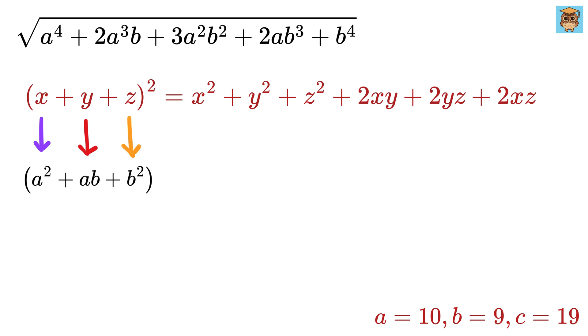then by applying the formula we get A squared plus AB plus B squared whole squared equals: X squared gives A to the 4th, Y squared gives A squared times B squared, and Z squared gives B to the 4th, 2 times XY gives 2A cubed B, 2YZ gives 2AB cubed, and 2XZ gives 2A squared times B squared.